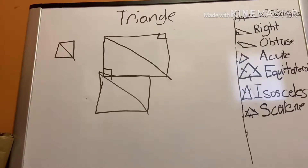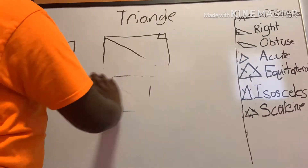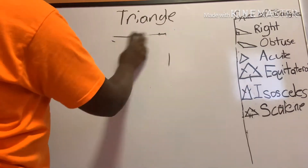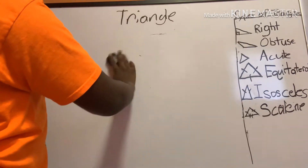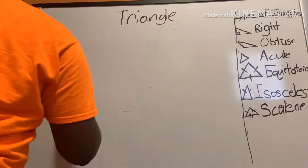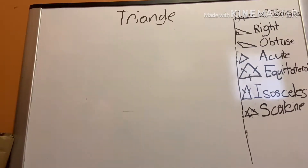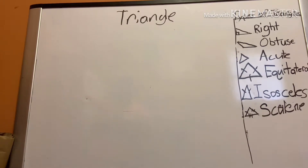Let's say you're trying to find an angle of a triangle but you don't know what type of triangle it is. Let's actually go over all the triangles, because knowing your triangle types can help you even without a protractor — but it's better if you know all your triangles and are able to use the protractor.